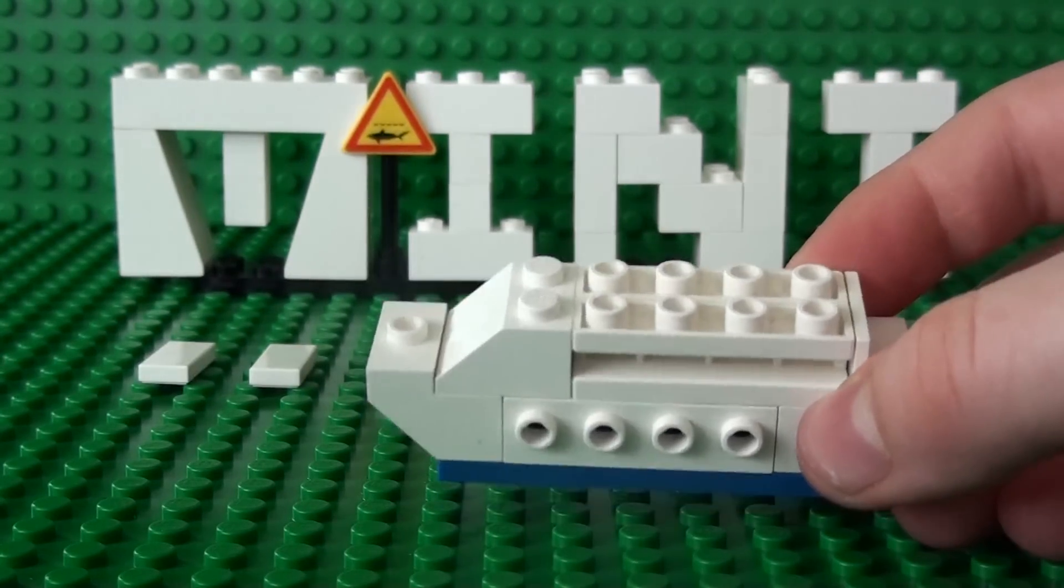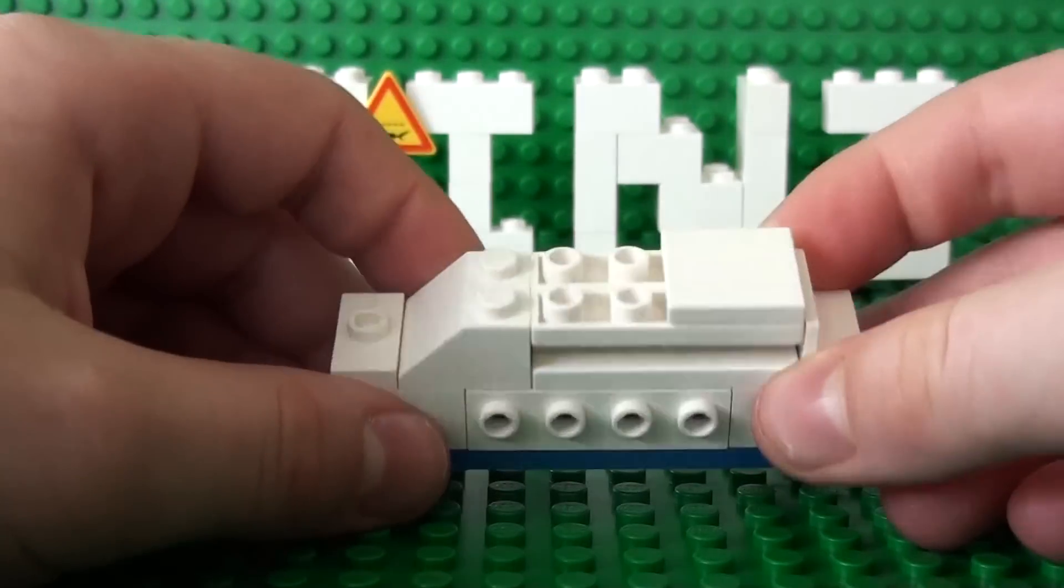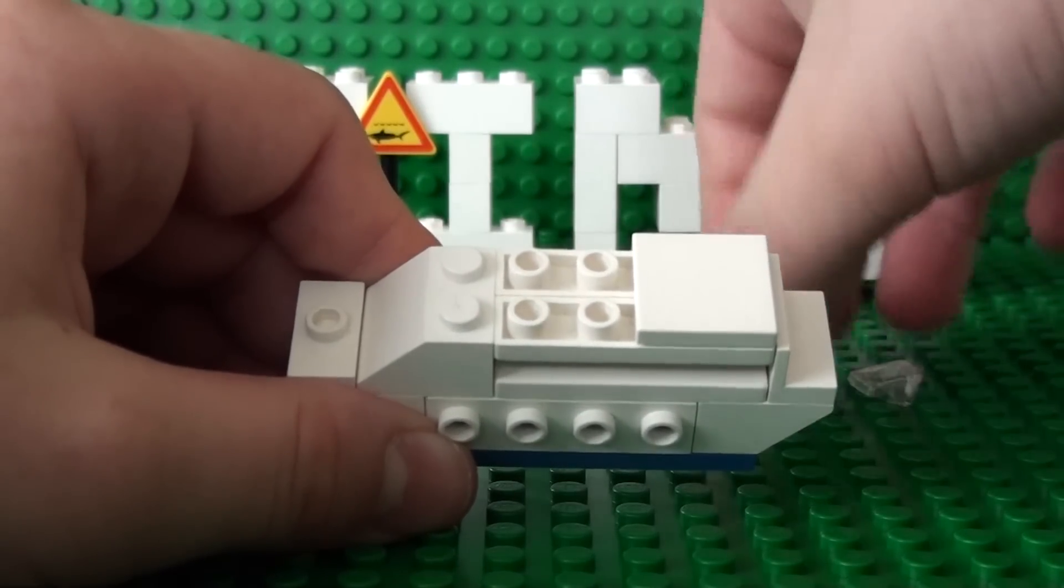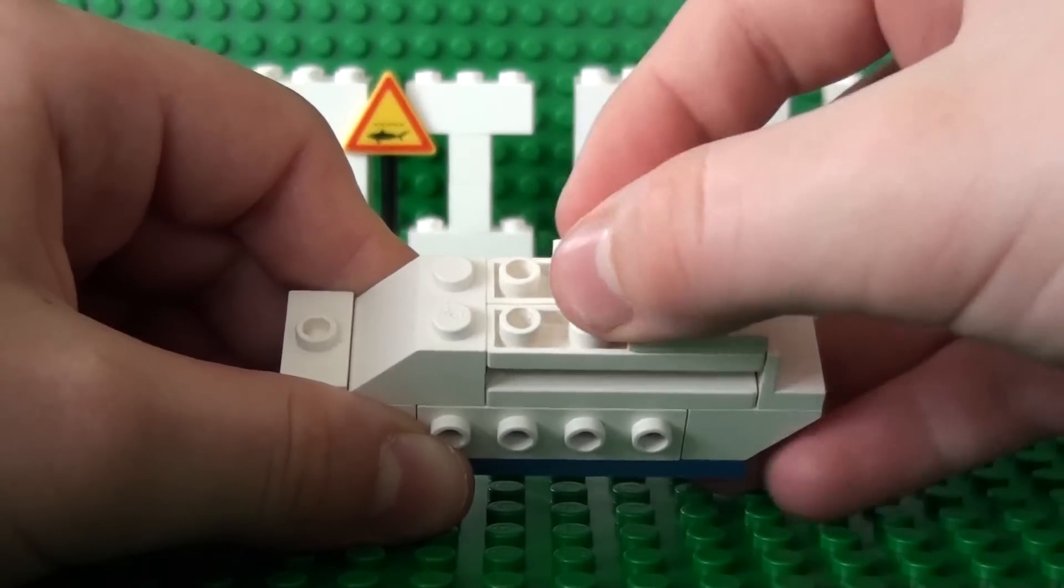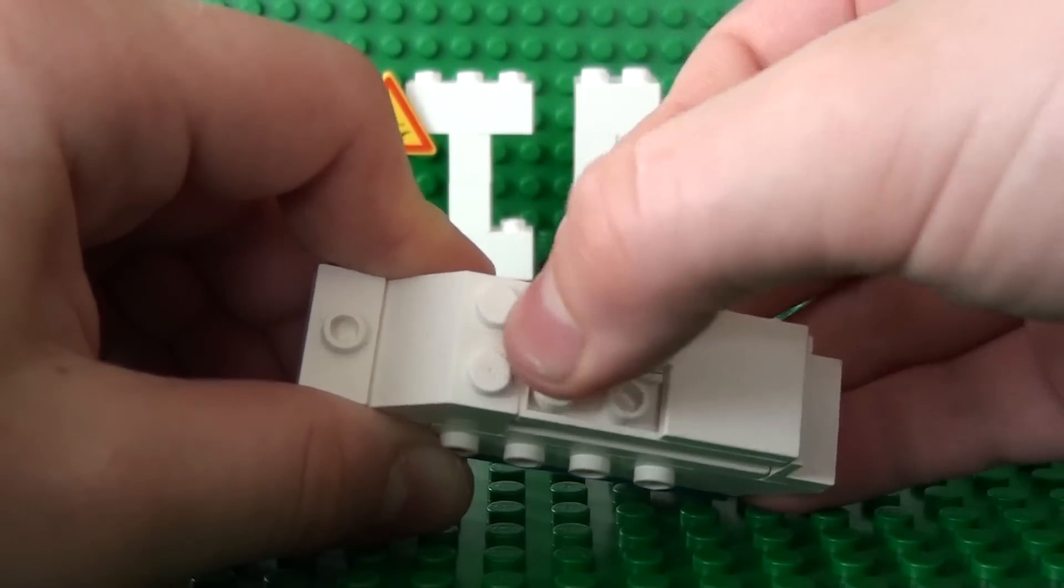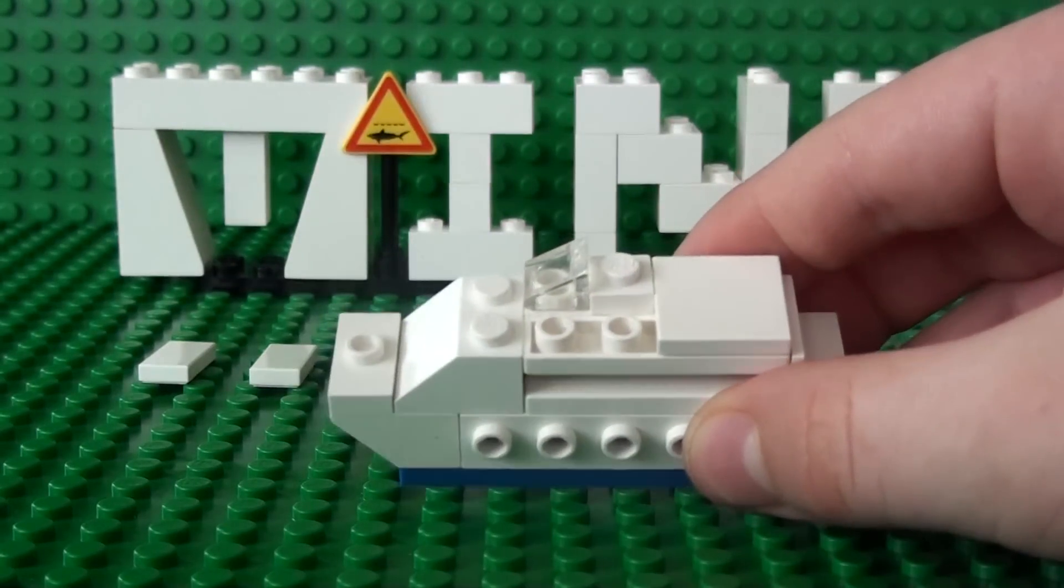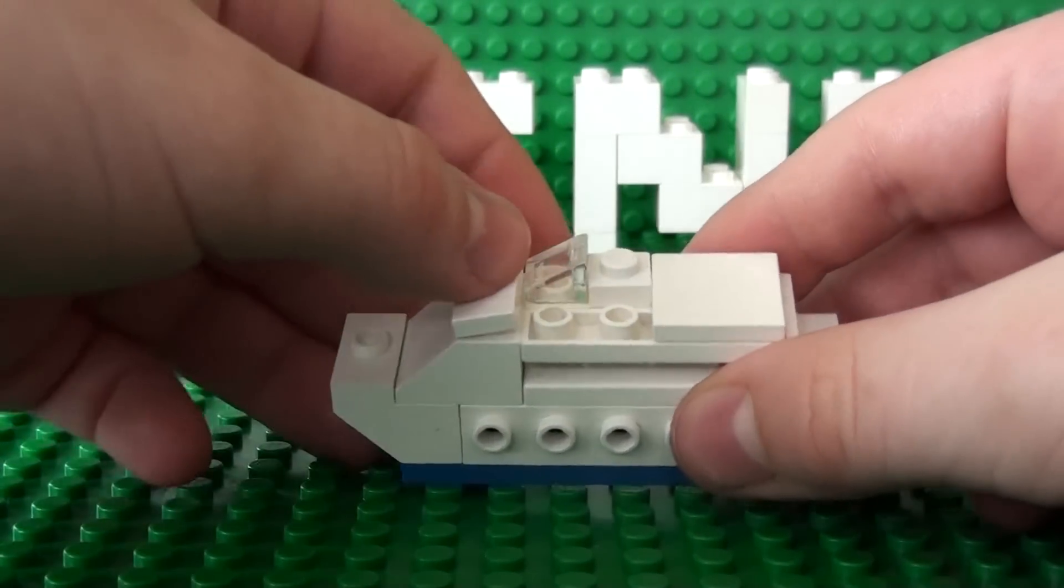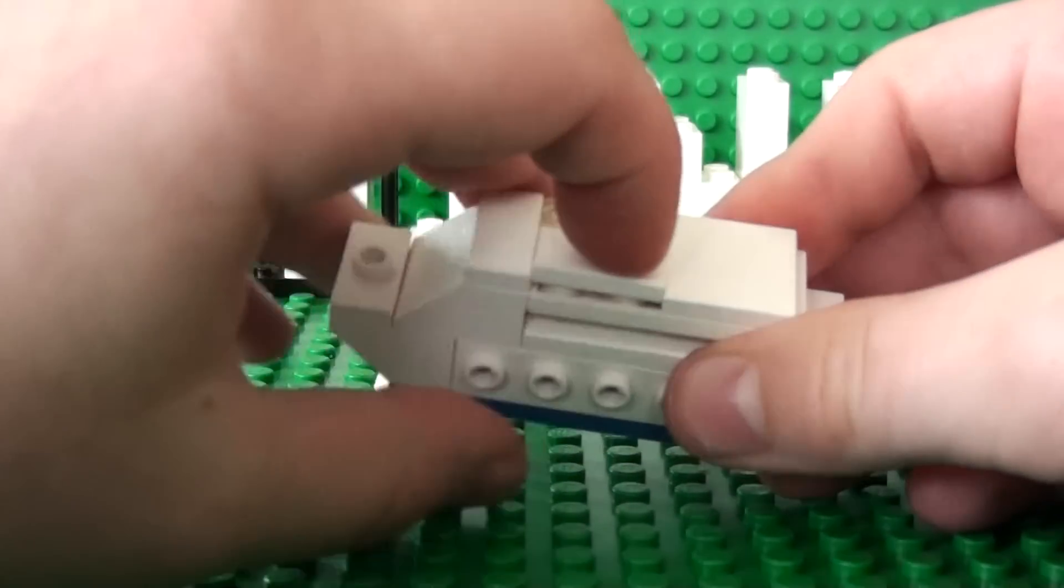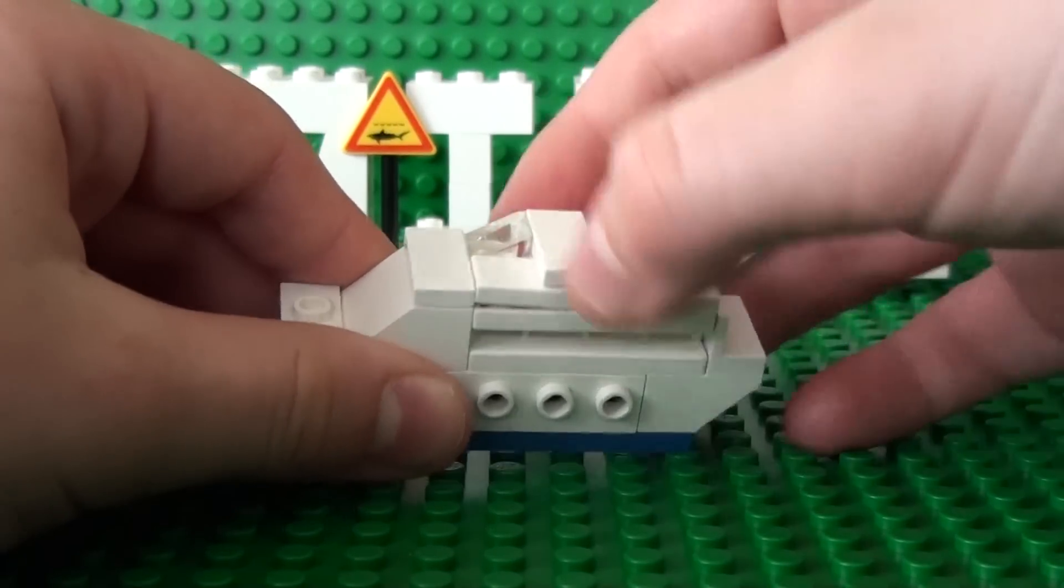Now you take your 2x2 plate smooth and put it here. Now you take your 1x2 plates smooth and put them here and here, and finally put the last 2x2 plate smooth on top here.